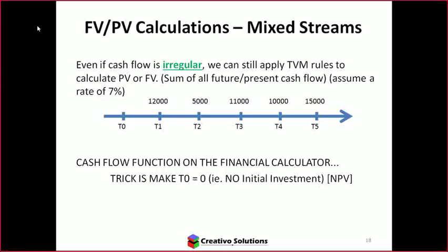When doing mixed stream cash flows, the CF/NPV function is what you use — not the amortization function. Amortization is something separate and uses the AMRT button on the calculator. For mixed streams, you use CFJ and NPV. We'll discuss what amortization is and look at an example as well.